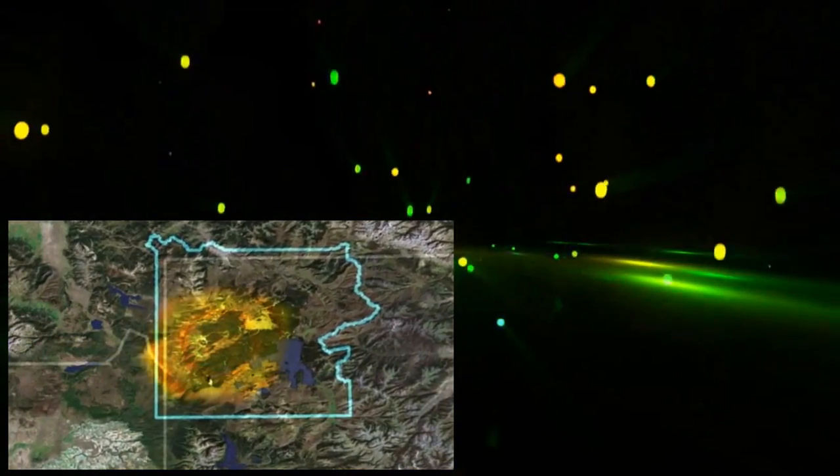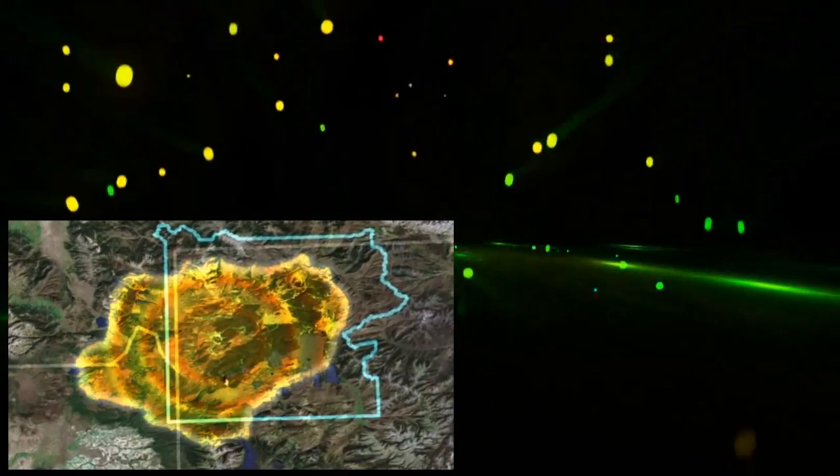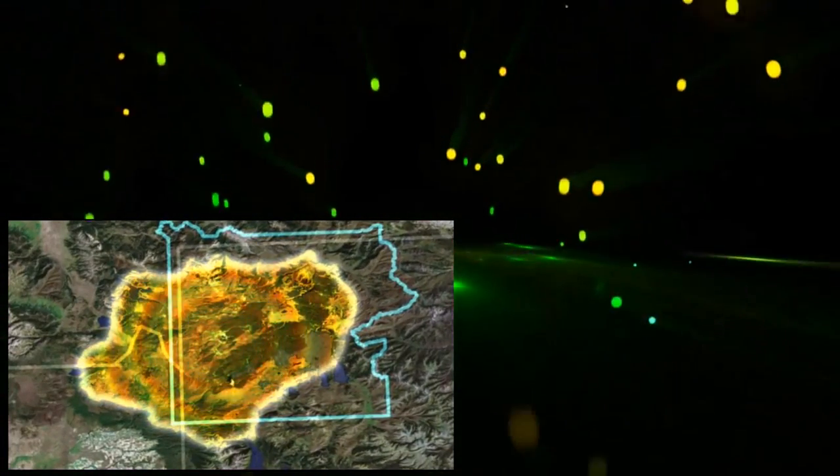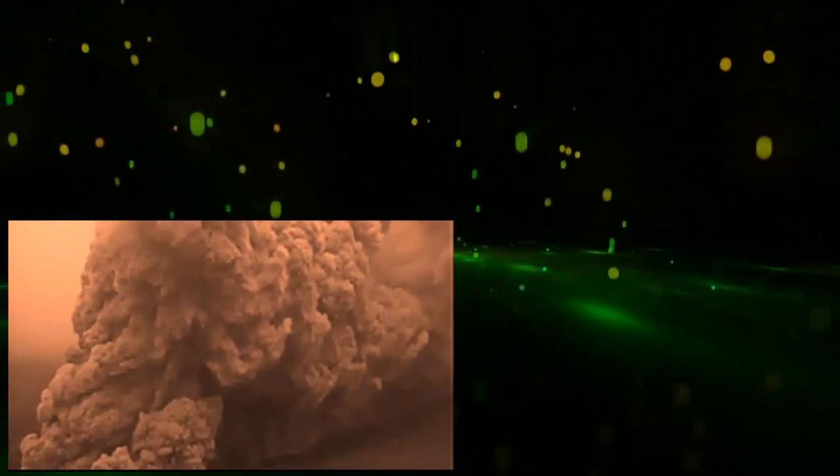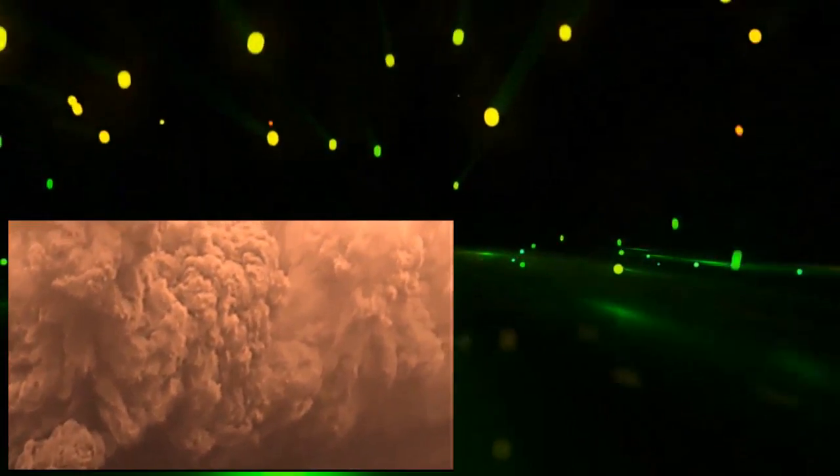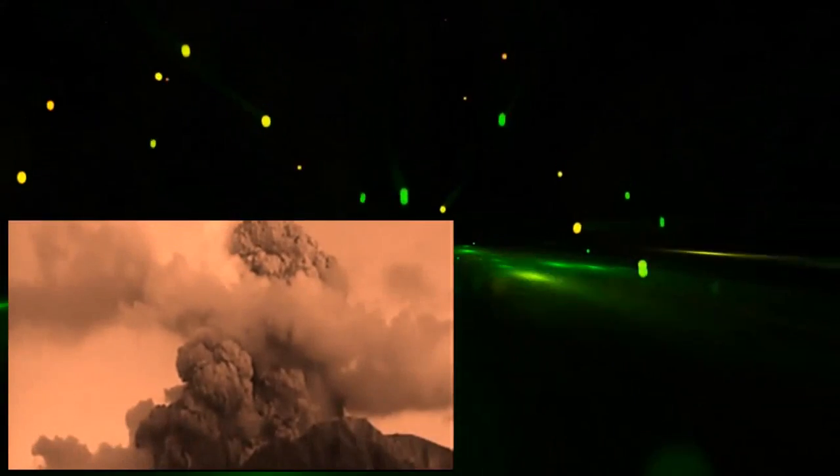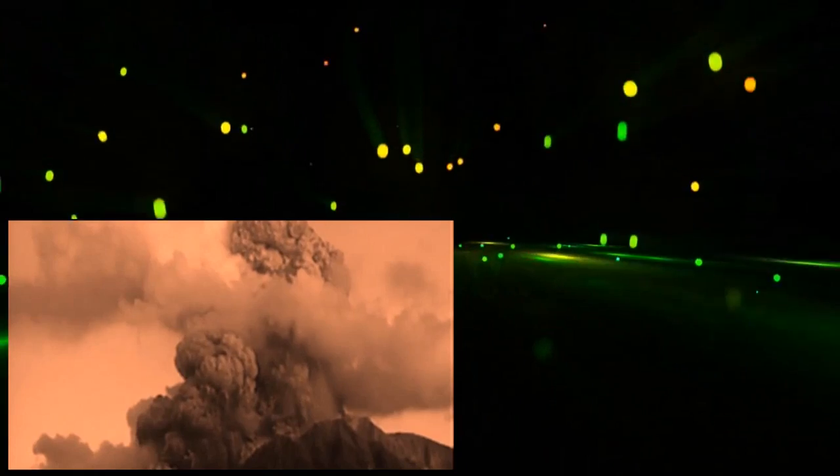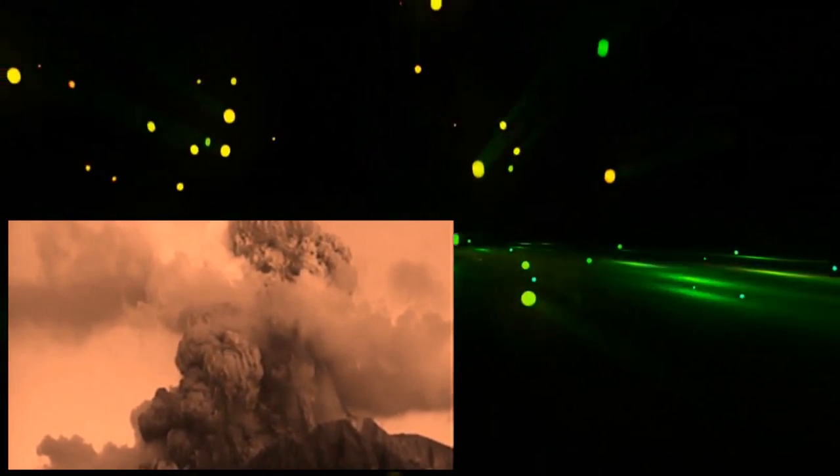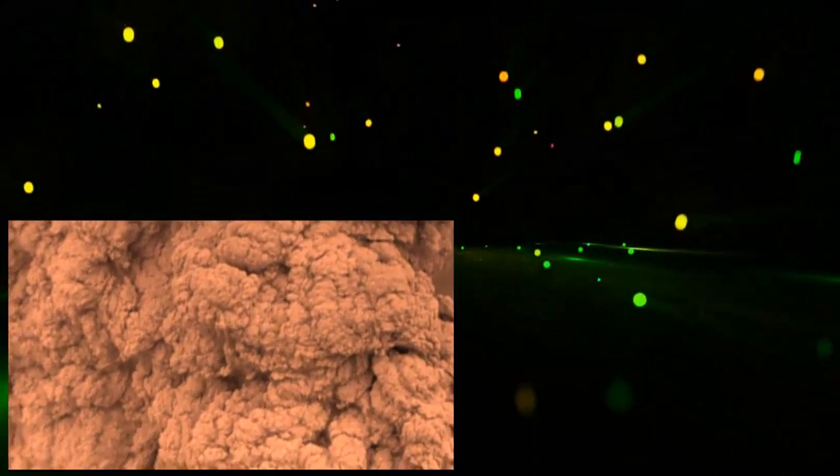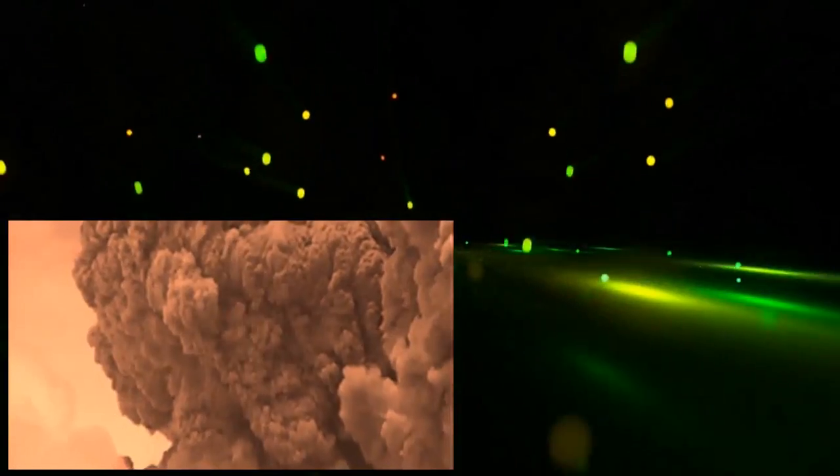They extend outside of Yellowstone into Idaho and the Teton region. Some material flowed down and covered parts of Jackson Hole, extending tens of miles from the eruption location.